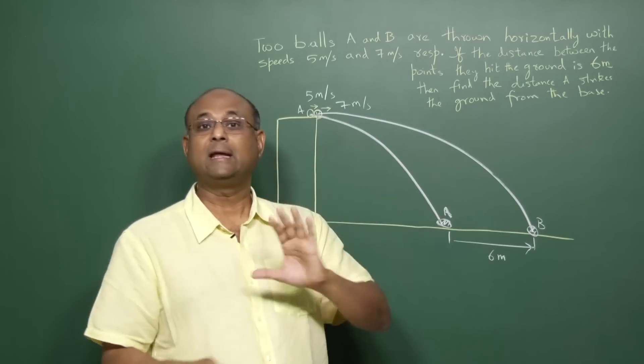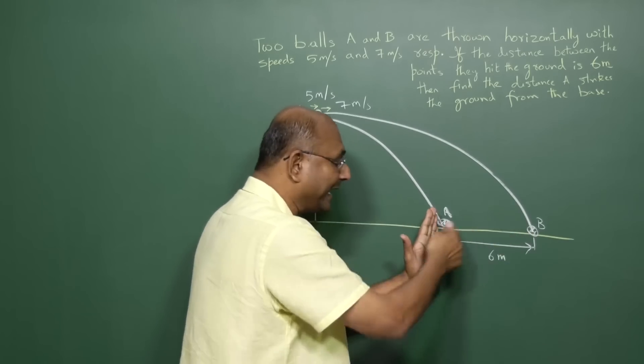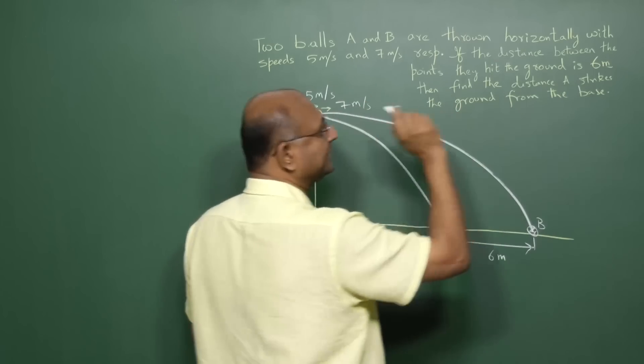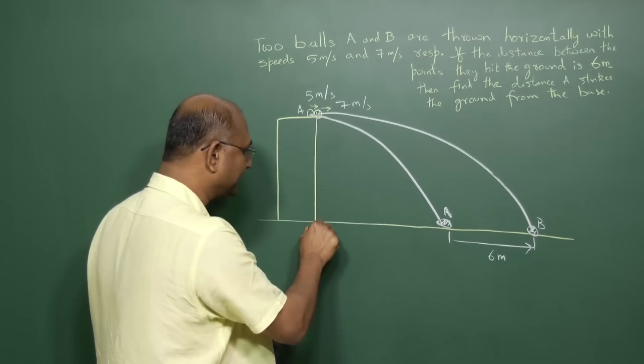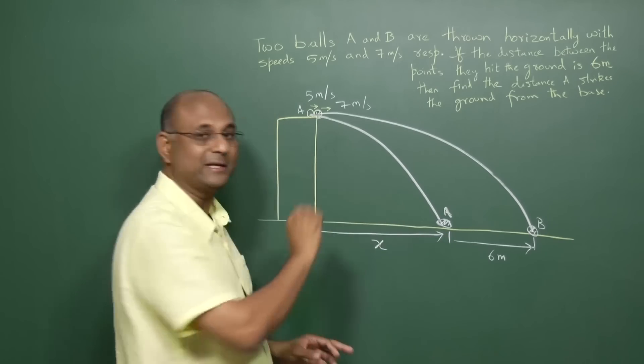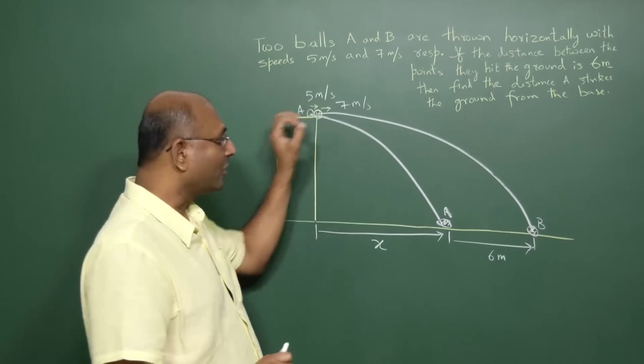Once you draw the diagram, you understand very clearly what is the information given. It is not that this is 6, it's not that is 6, it is the gap between the two that is 6 meters. And what is the question? Find the distance A strikes the ground from the base. Basically, we want to find out what this distance is. Let's call that x. So the question is find x.